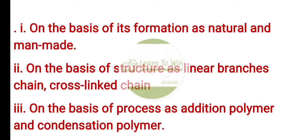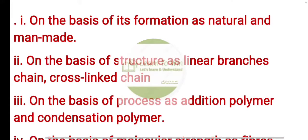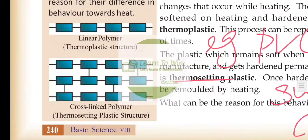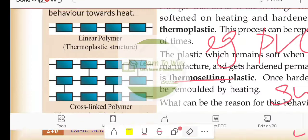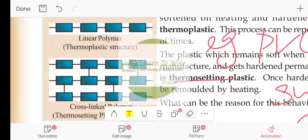On the basis of structure, we divide into linear branched chain and cross-linked chain. This is a linear polymer. This is a cross-linked polymer.